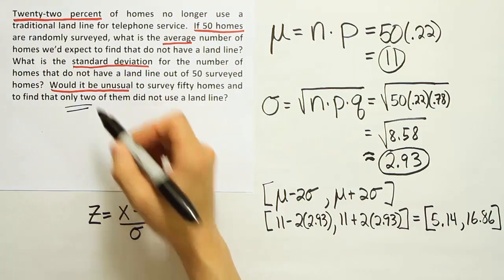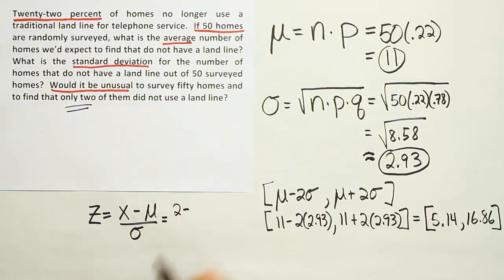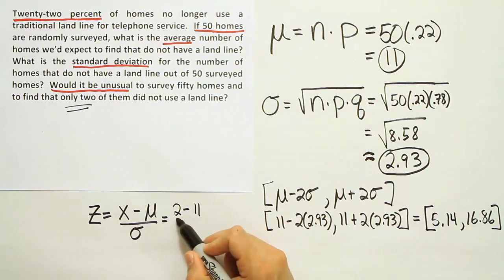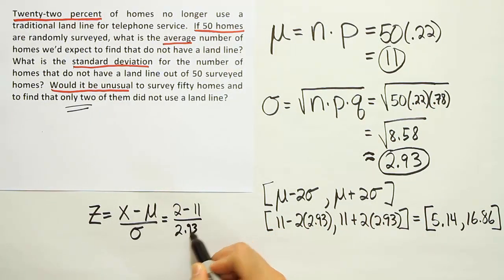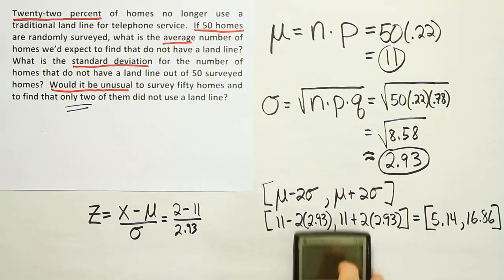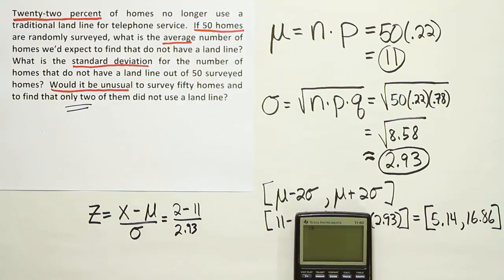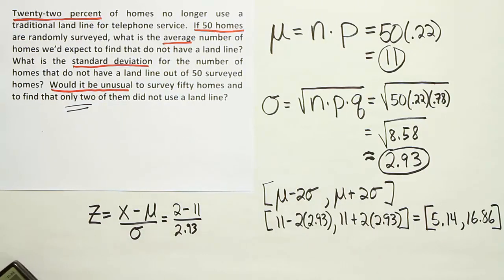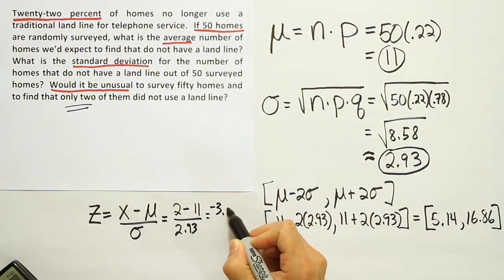We use two as the x value. We'll check to see if that value is unusual. Put the mean of 11, and then divide by the standard deviation of 2.93. When we do that, let's see what we end up with. We have two minus 11, which of course is negative 9, divided by 2.93. When we do that, we get minus 3.07.